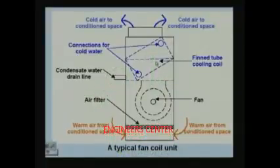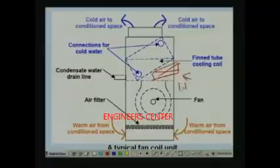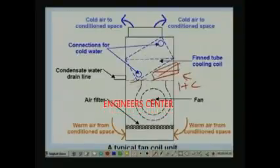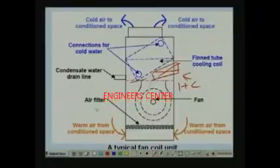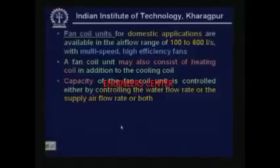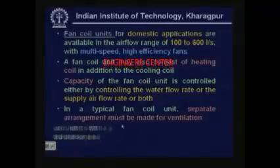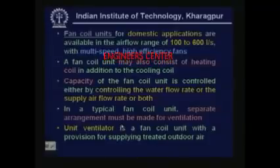In addition to a cooling coil, you can also have a heating coil — in a 2-pipe system this would be an electrical heater, while in a 4-pipe system it is a hot water coil. The capacity of the fan coil unit is controlled either by controlling the water flow rate, the supply air flow rate, or both, with supply air flow rate controlled by varying the fan speed. In a typical fan coil unit, separate arrangement must be made for ventilation, since there is no built-in provision for supplying outdoor air.